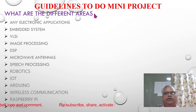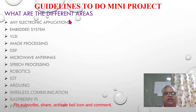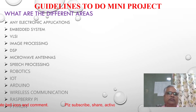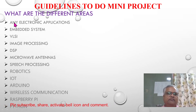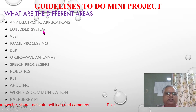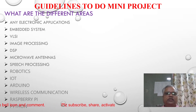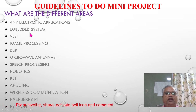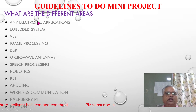Let us start with what are the different areas we can do in a mini project. One area is electronic applications — there are many electronic applications. You design one hardware circuit which will perform some electronic application. It can be an embedded system, which is actually a bigger area. The combination of discrete components and a programmable IC is a fine layer level, but you can still do it for a mini project. It comes under hardware and software.